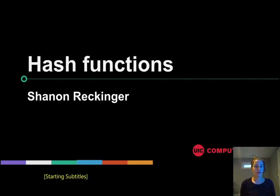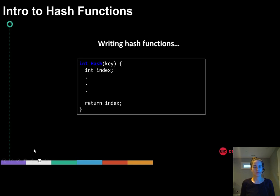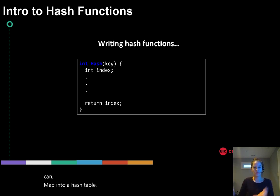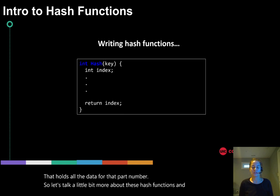Alright, in this video we're going to talk a little bit more about hash functions. So in the last video we went through a full example of how to create a hash table where we have a key of a part number with a certain pattern that can map into a hash table that holds all the data for that part number. So let's talk a little bit more about these hash functions and some of the important considerations when writing a hash function.